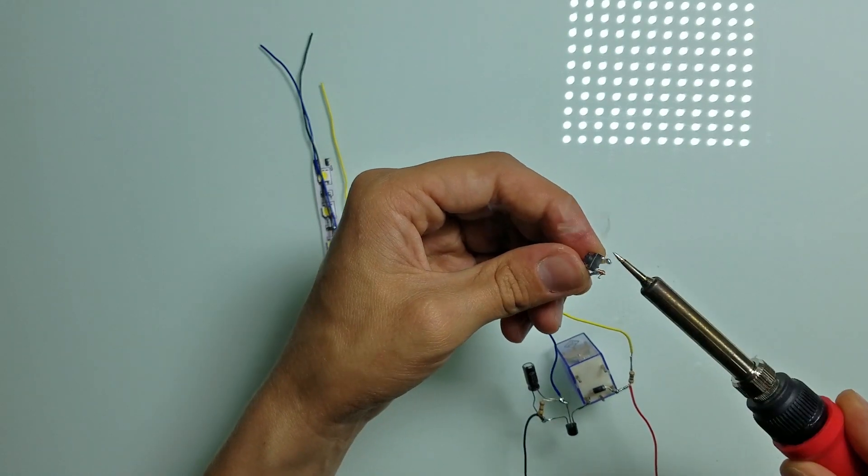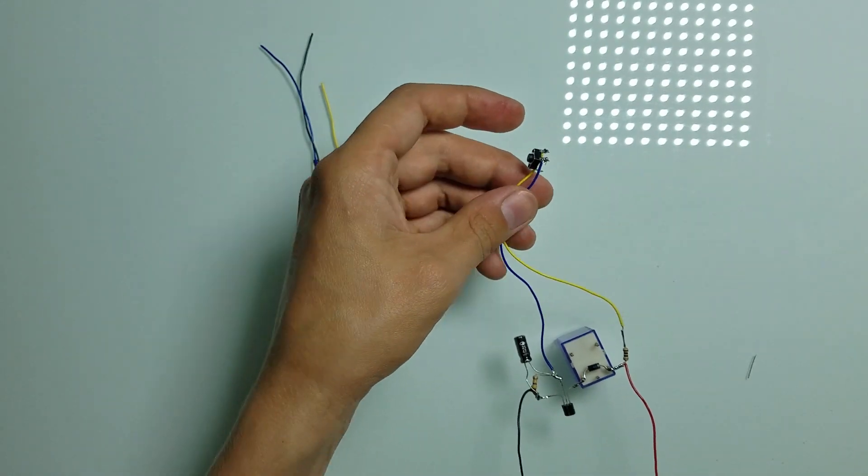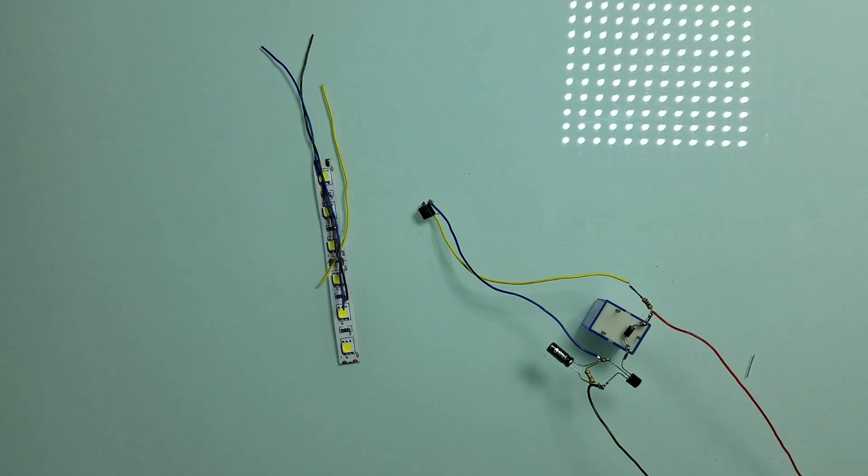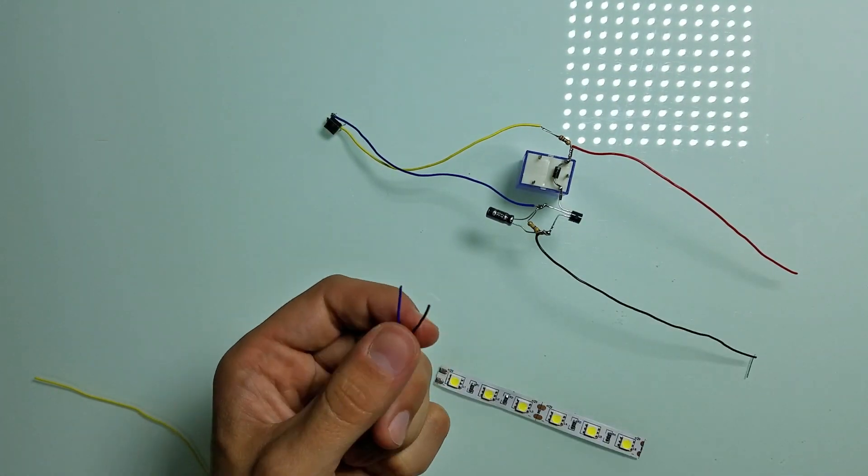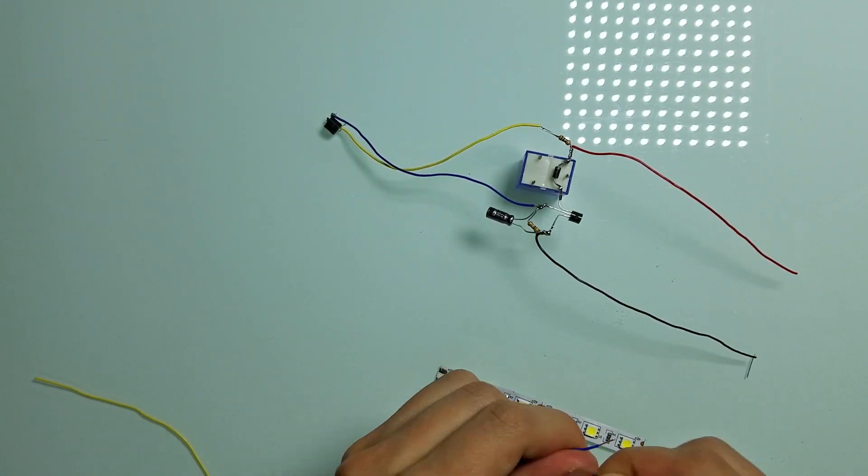And after a little bit of soldering this device is almost ready. Now we just need to solder wires to the LED strip.